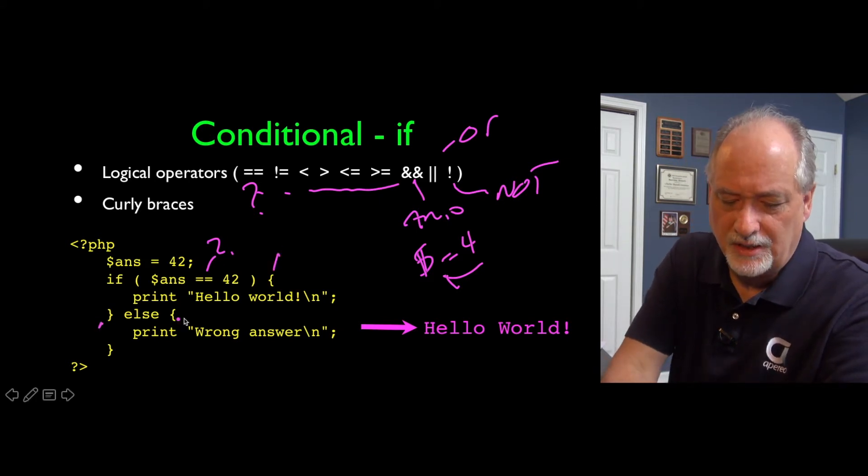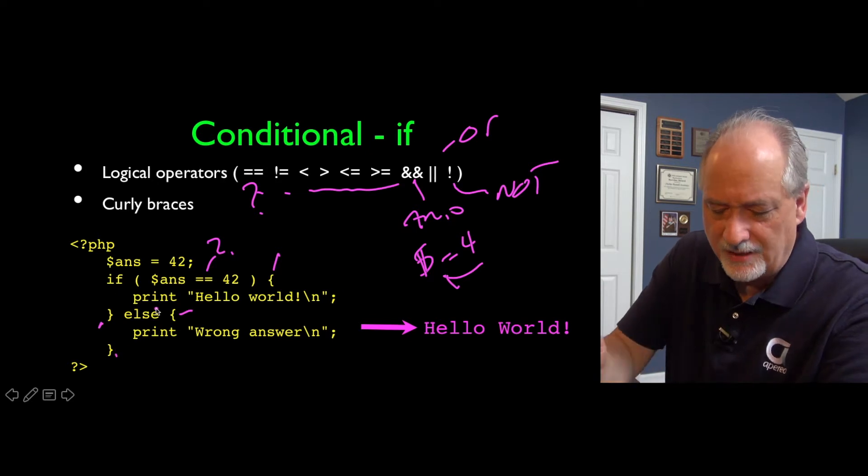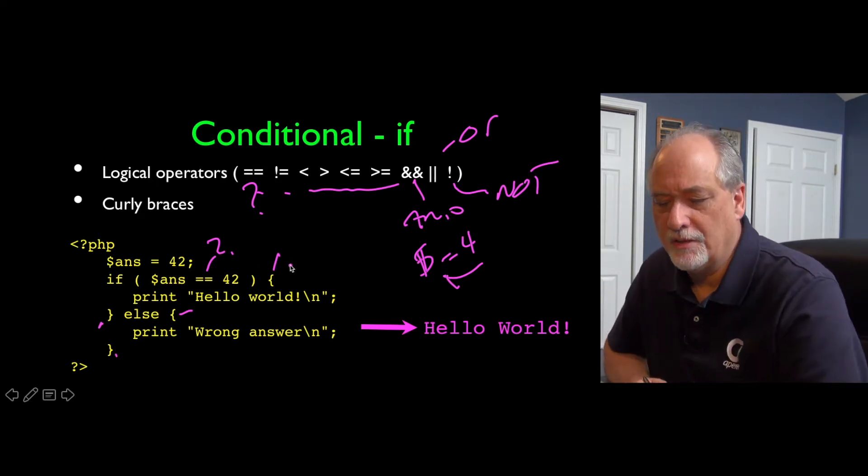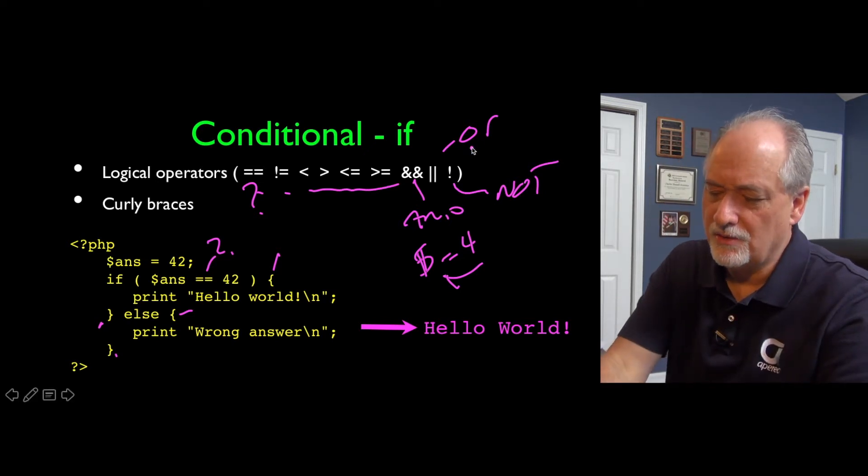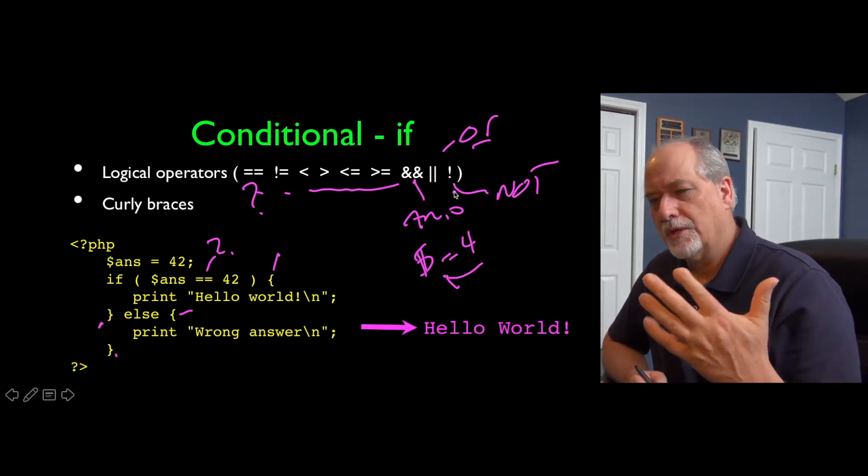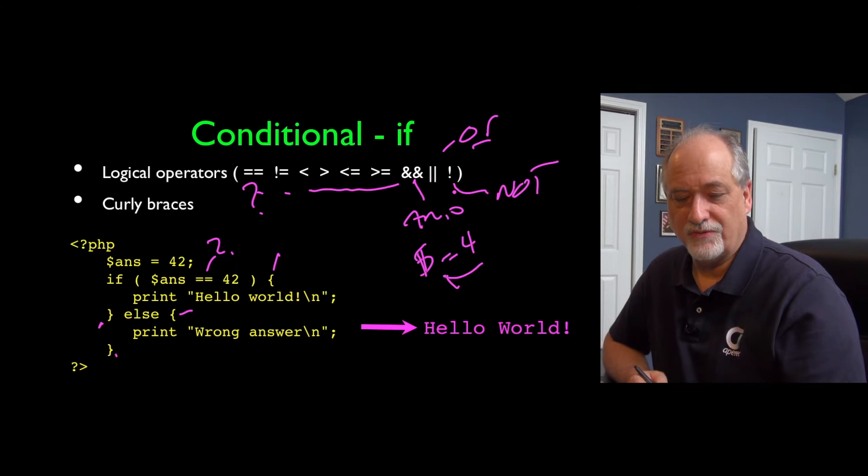We use curly braces to indicate the beginning and end. If then else, you have to put parentheses for those of you coming from Python. The other thing from Python is or, and, and not are the logical operators. And we have these sort of short versions of them.